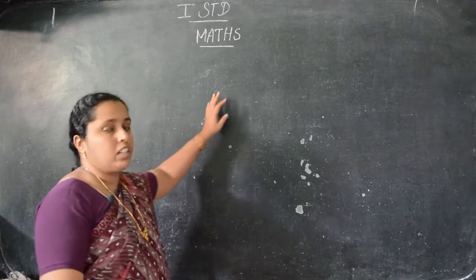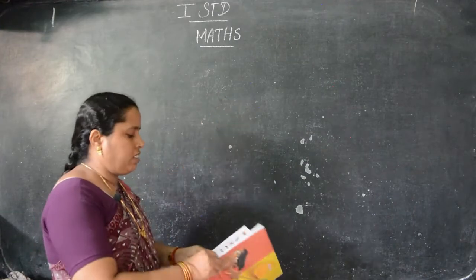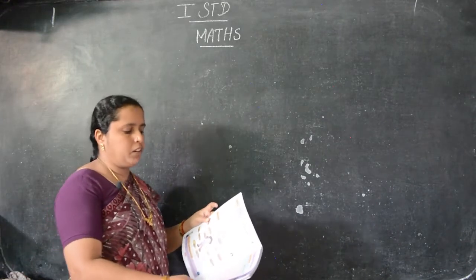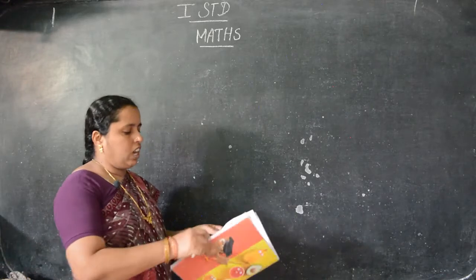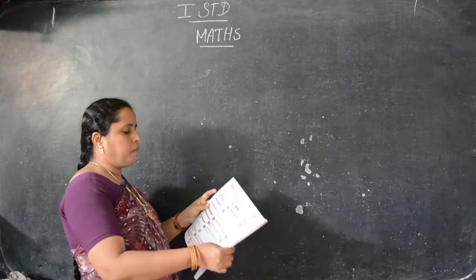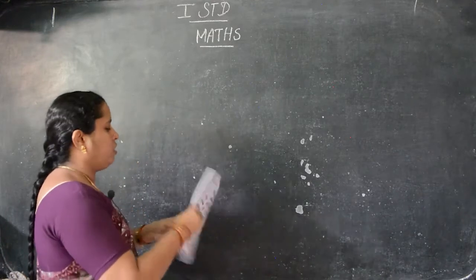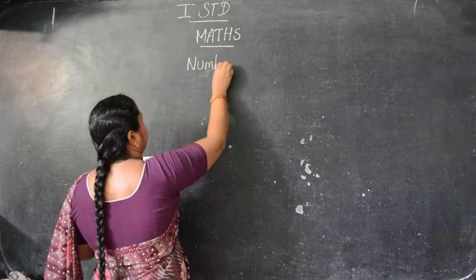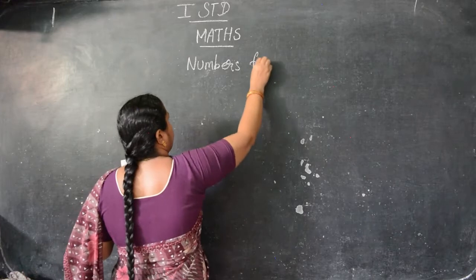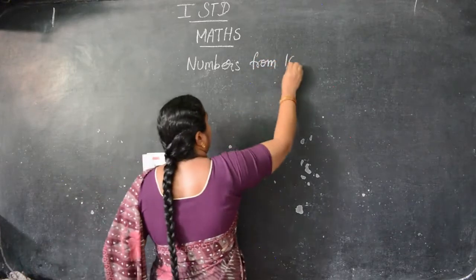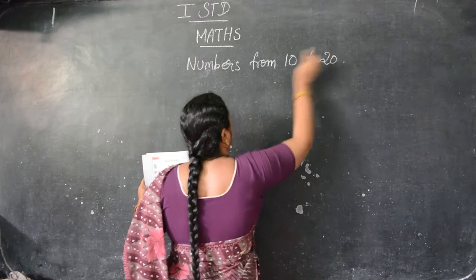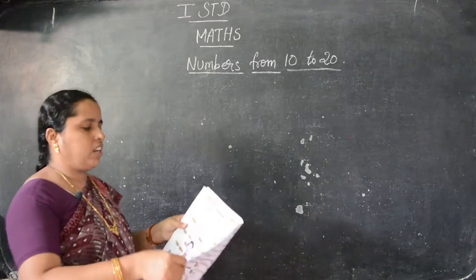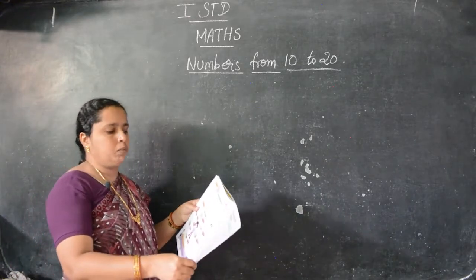Good morning children. Now we are going to learn maths for first standard. In previous classes, what we saw? We saw a number rhyme for numbers from 10 to 20 — the number rhyme song.